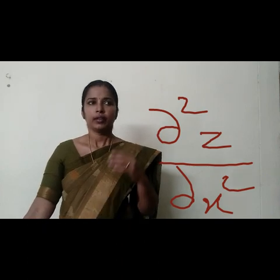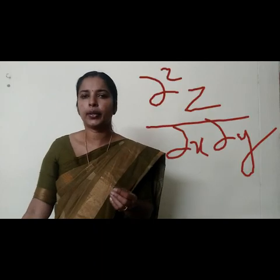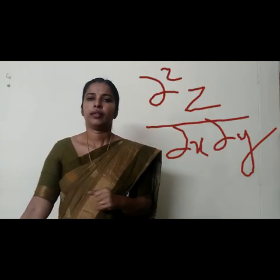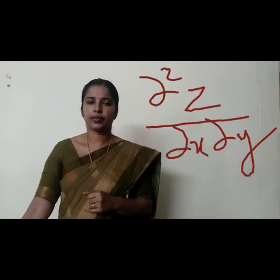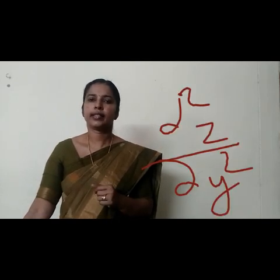Again, you can differentiate p partially with respect to x — that's dou square z by dou x square. Also you can differentiate p partially with respect to y — that's dou square z by dou x dou y. Also you can differentiate q partially with respect to y — that's dou square z by dou y square. These are the second order partial derivatives of z. Similarly you can differentiate these for getting higher order partial derivatives.